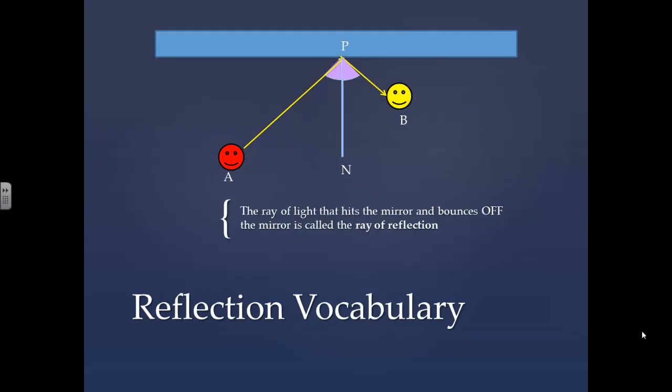The ray of light that hits the mirror and bounces off the mirror is called the ray of reflection. The angle between the ray of incidence and the normal is called the angle of incidence. The angle between the ray of reflection and the normal is called the angle of reflection.